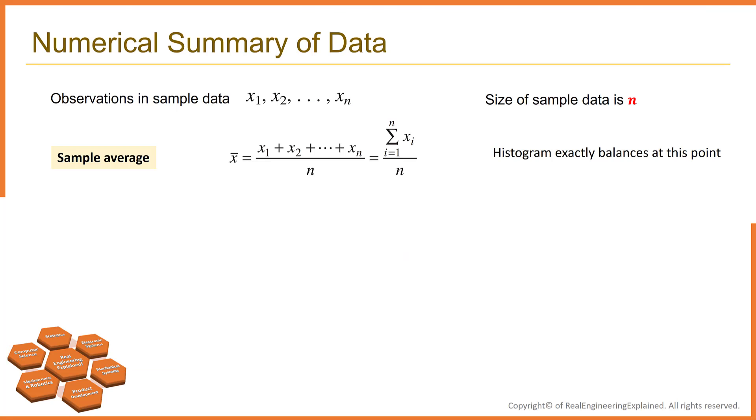The second topic which I would like to talk about is Numerical Summary of Data. The histogram provides a visual display of three properties of sample data: the shape of the distribution of data, the central tendency in the data, and the scatter or variability in the data. Assume X1, X2 until Xn are the observations in a sample. The most important measure of central tendency in the sample is sample average. Note that the sample average is simply the arithmetic mean of N observations, the summation of all numbers divided by the number of observations. The sample average for the data is the point at which the histogram exactly balances. So, the sample average represents the center of mass of sample data.